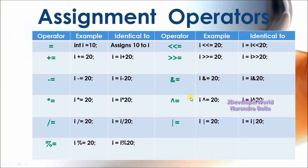All the operators can be represented in this shortcut form. For example, if I have a bitwise OR operator, i |= 20 means i = i | 20. We will see one of the examples.